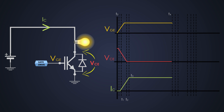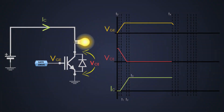At time T4, we start to provide negative VGE to the IGBT. The VGE keeps on decreasing and collector current also starts decreasing. At time T5, the VGE decreases to 90% of its maximum value. At time T6, the collector current reaches 90% of its maximum value and collector-to-emitter voltage starts increasing.